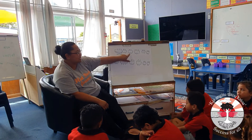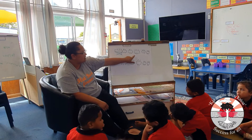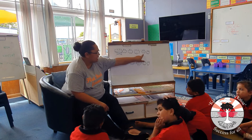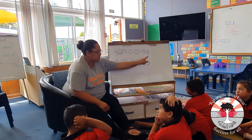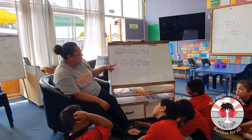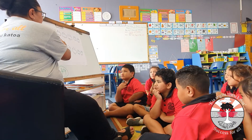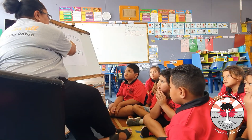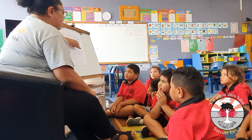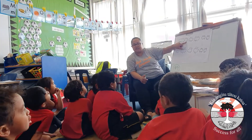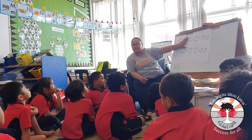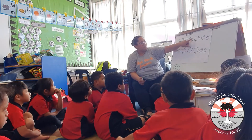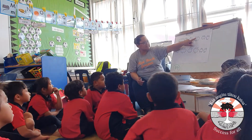Once it's been solved, the lesson stops. Together with the teacher, the group that solved it will explain their thinking to the class. In this case, the children counted all the chairs one by one. This gives the teacher an opportunity to either extend their thinking or continue to strengthen where they're at at the moment.